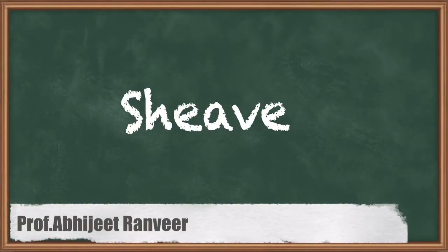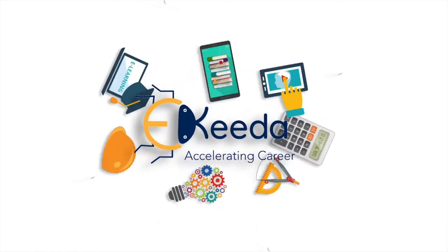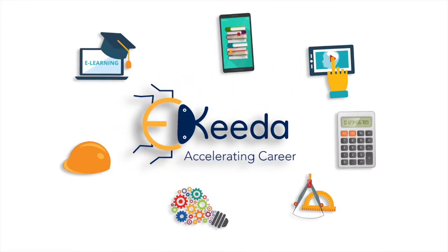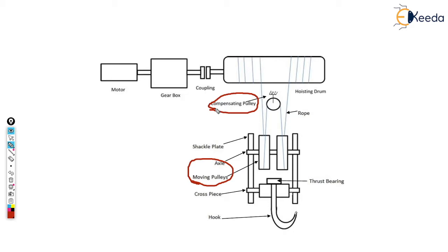In this video we will study about sheave or pulley design. This is the basic diagram of the assembly. There are three pulleys we are going to use: moving pulleys which move with the axle and the whole assembly called the snatch block, and one fixed pulley called the compensating pulley. We will look at all of these pulleys in this video.